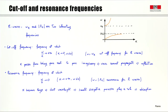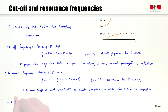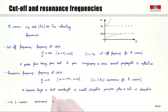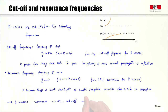Therefore, the resonance frequency is the frequency at which there is absorption of the wave. This was for the right-handed waves. For the left-handed waves, we have a resonance at ω = ωi and a cutoff at ω = ωl.